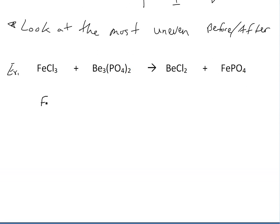So we do exact same thing as before. We just write the elements here. I don't need to write the table there. We just go Fe, Cl chlorine, Be, P, O. So we just go like this. And then we go before, after.